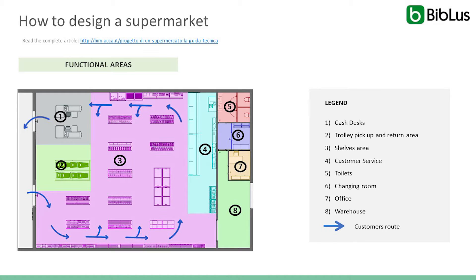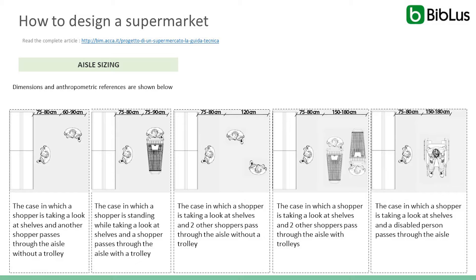The design of a supermarket involves the study of different aspects that allow the correct organization of the building elements and the internal components. In this slide we can see the different functional areas arranged in order to maximize sales and guarantee a suitable workplace for employees. These are the recommendations to correctly size corridors between exhibitors and favor a comfortable flow of customers and employees.